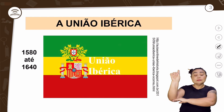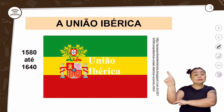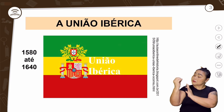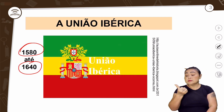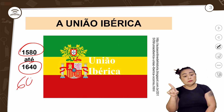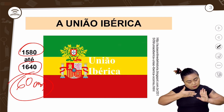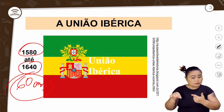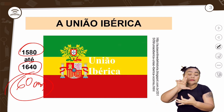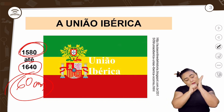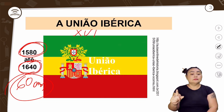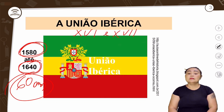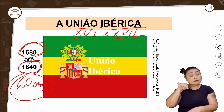Olha aí a bandeira da União Ibérica. 60 anos — de 1580 a 1640. Inicia no século 16 e termina no século 17. União Ibérica. Isso para o Brasil tem uma consequência muito grande.